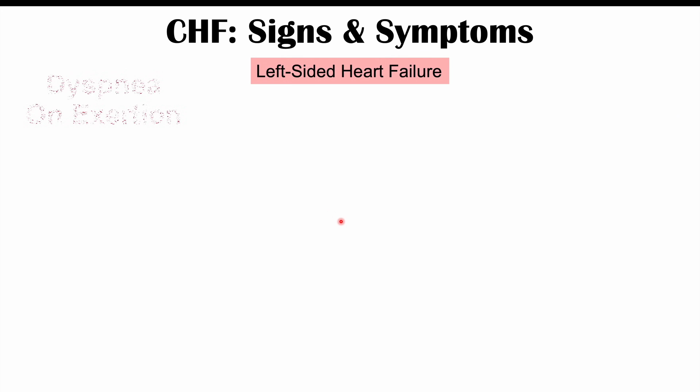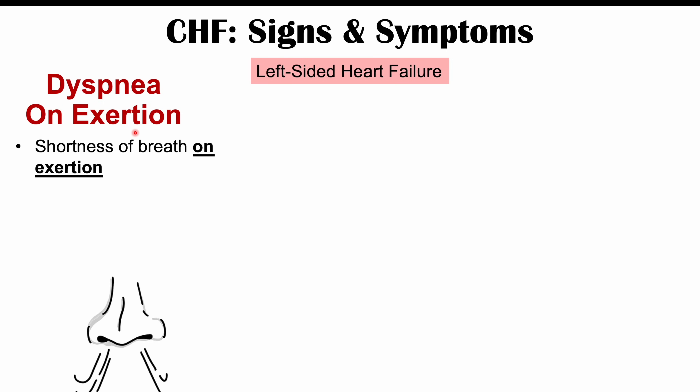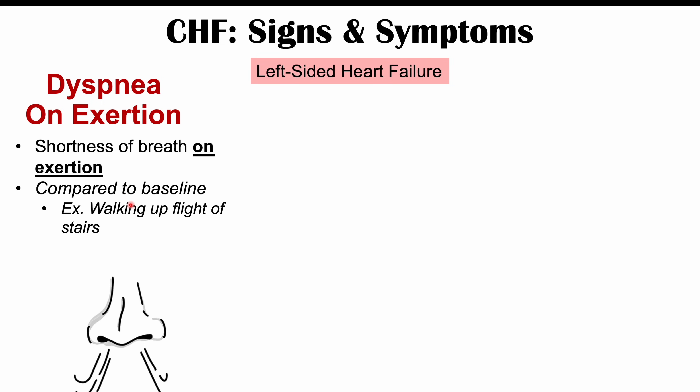Left-sided heart failure has three very characteristic hallmark findings. The first is dyspnea on exertion — dyspnea is shortness of breath, and exertion refers to physical activity. So shortness of breath during activity, compared to the patient's baseline before the heart failure developed. A classic example is shortness of breath when walking up a flight of stairs when previously they had no issue. It can progress from dyspnea on exertion to dyspnea at rest.